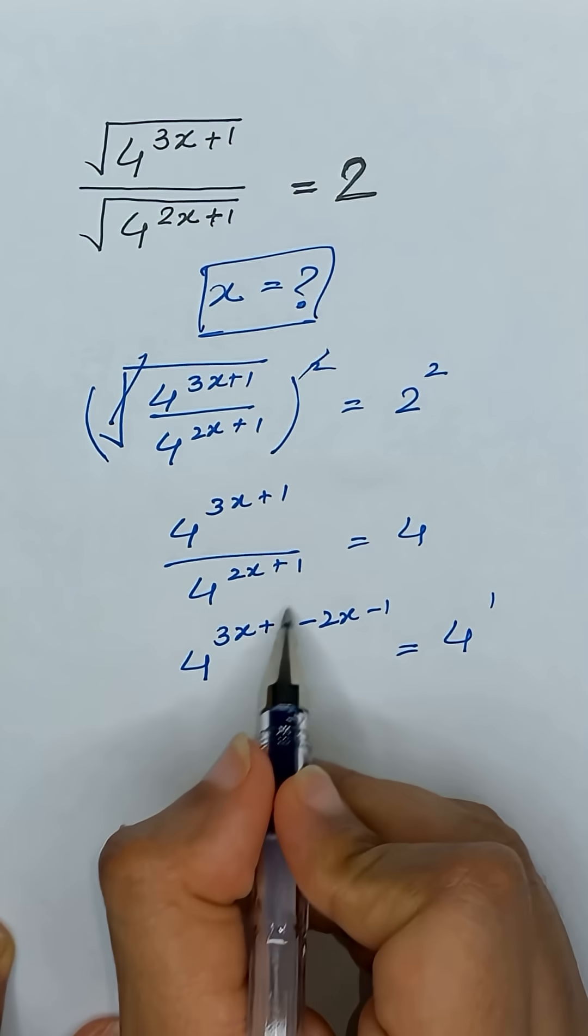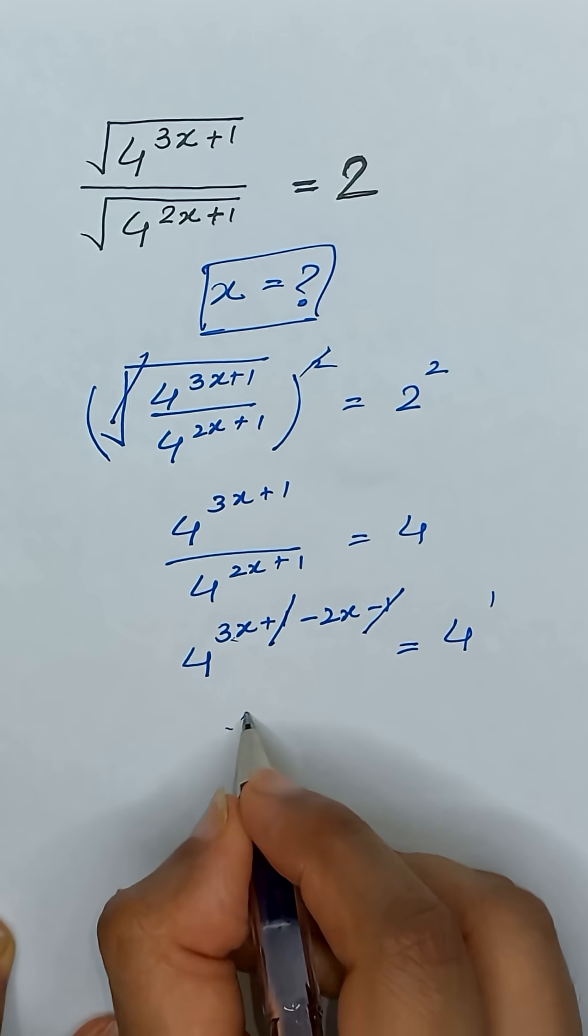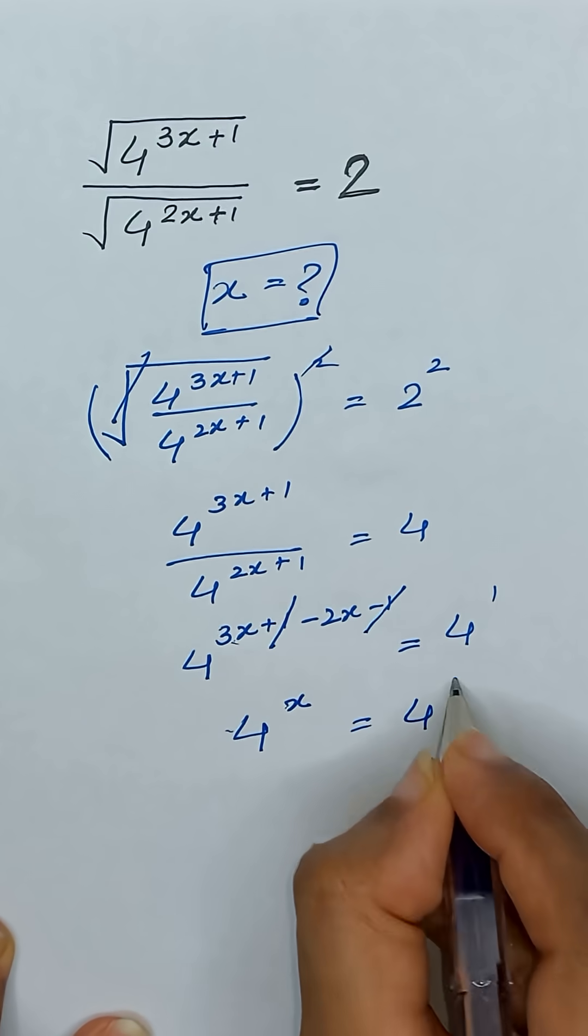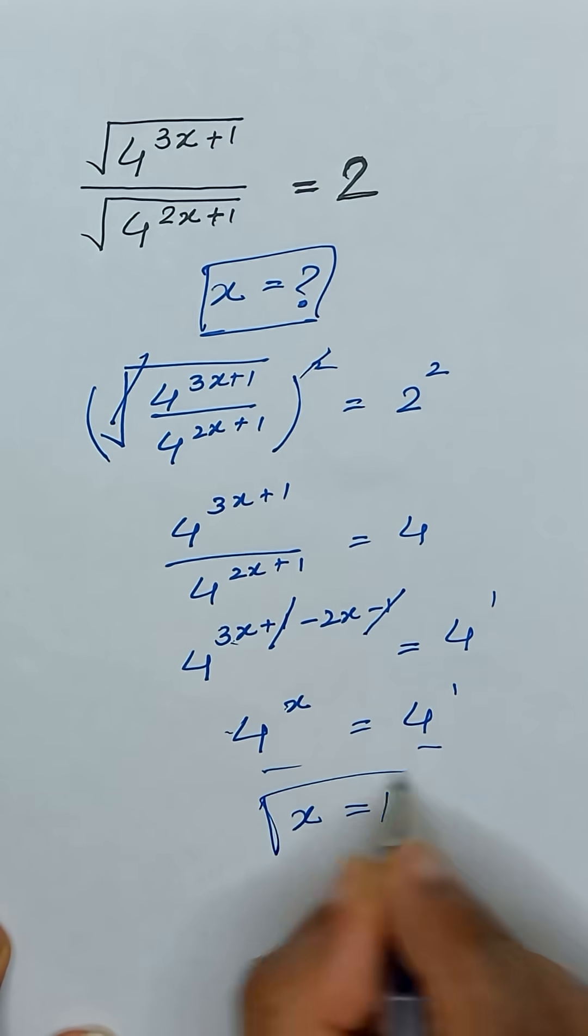4 is same as 4 to the power 1. This one and negative 1 will be cancelled out and 3x minus 2x will give us x is equal to 4 to the power 1. Bases are same so we can equate its powers. So the value of x is equal to 1.